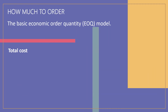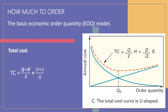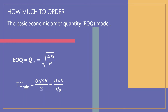The total annual cost associated with carrying and ordering inventory when Q units are ordered each time is: TC = (Q × H / 2) + (D × S / Q). The total cost curve is U-shaped (convex) with one minimum, and it reaches its minimum at the quantity where carrying and ordering costs are equal. An expression for the optimal order quantity can be obtained using calculus, giving the formula: Q₀ = √(2DS/H). Thus, given annual demand, the ordering cost per order, and the annual carrying cost per unit, one can compute the economic order quantity. The minimum total cost is found by substituting Q₀ for Q in the total cost formula.